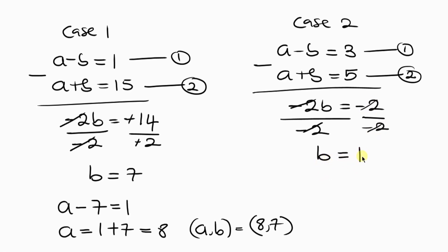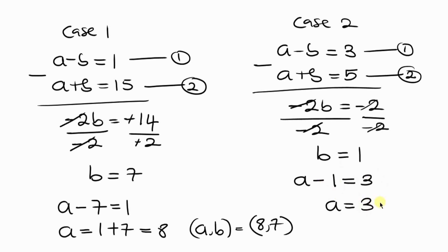Substituting B equals 1 into equation 1: A minus 1 equals 3, so A equals 3 plus 1, which is 4. From our second case, A equals 4 and B equals 1.